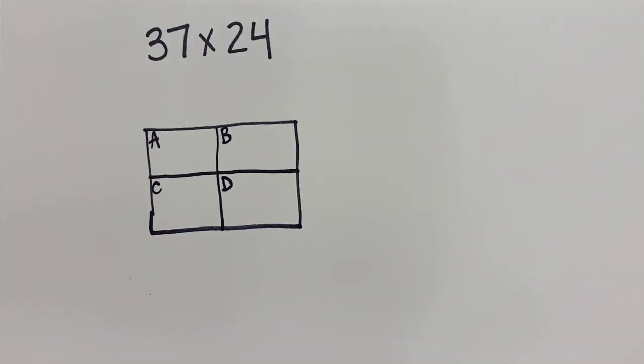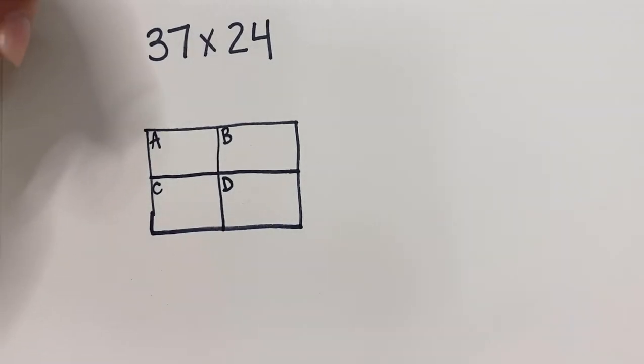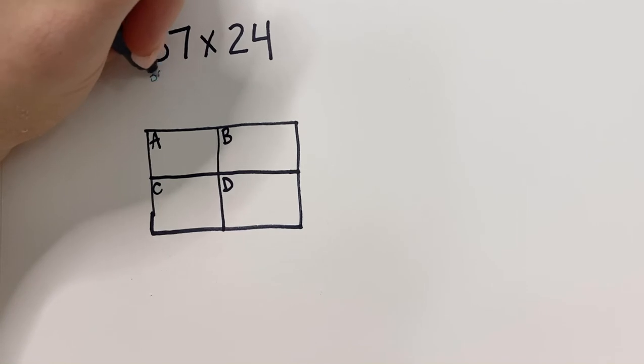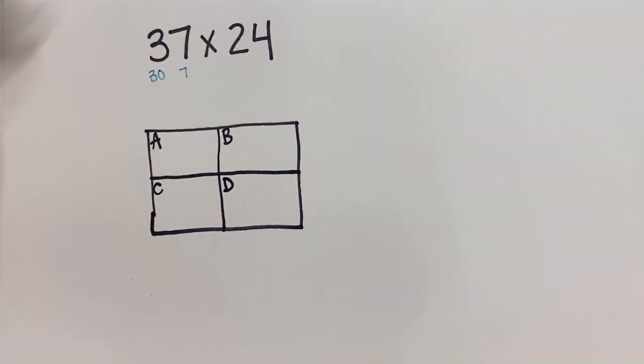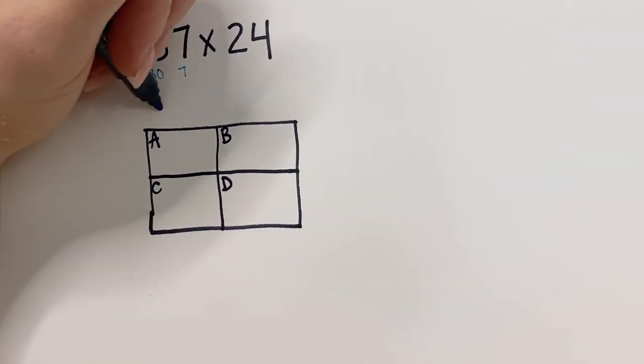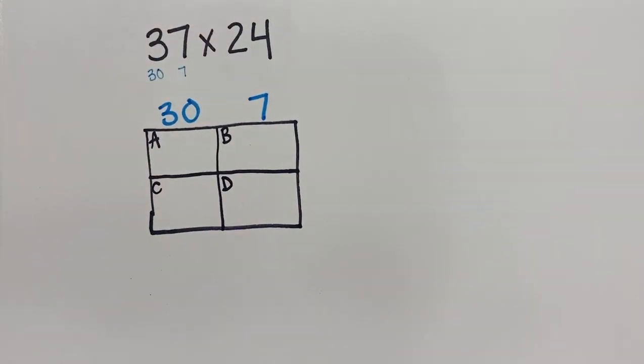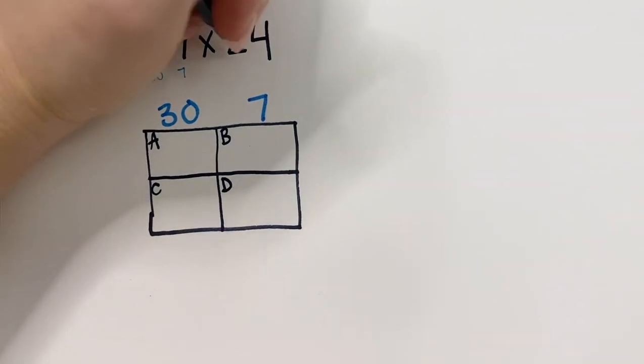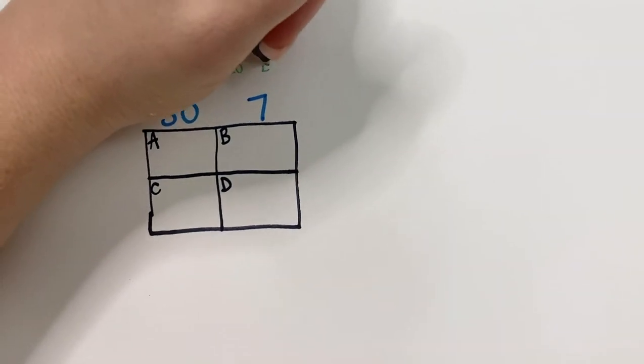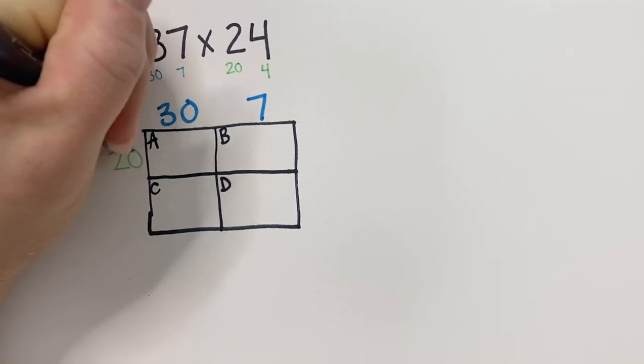What we're going to do is we're going to break up the numbers. I see I have 37. That's the same as 30 and 7. So what I'm going to do is I'm going to put 30 here and 7 here. I'm going to do the same thing with my other number. I see my other number is 20 and 4, so I'm going to do 20 and 4.